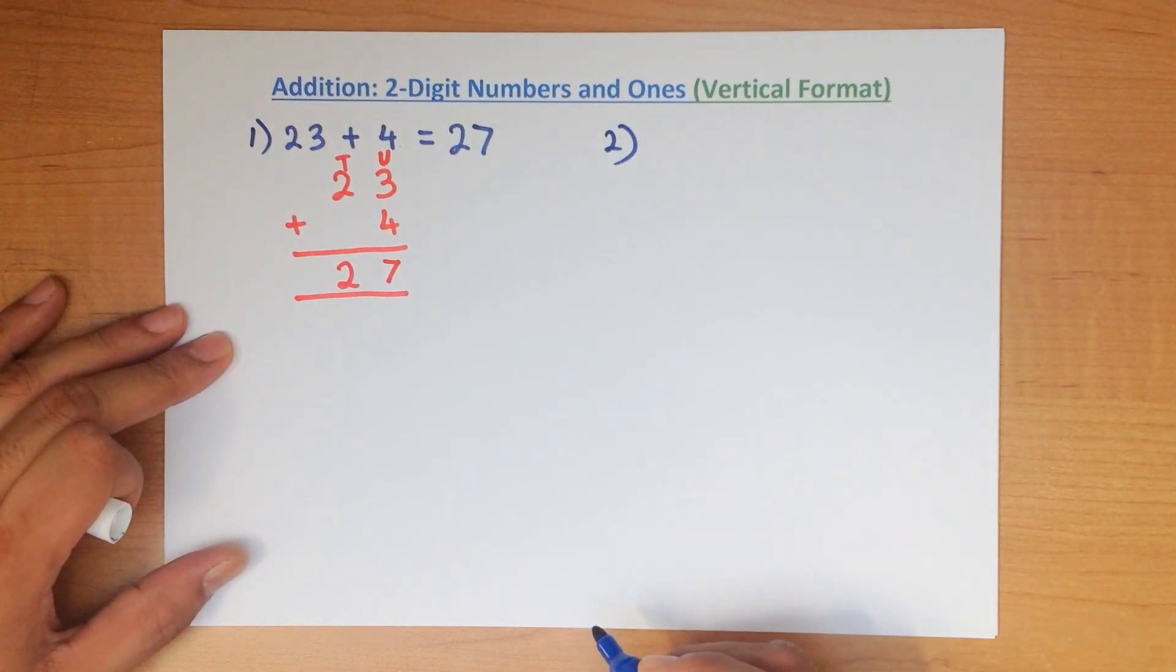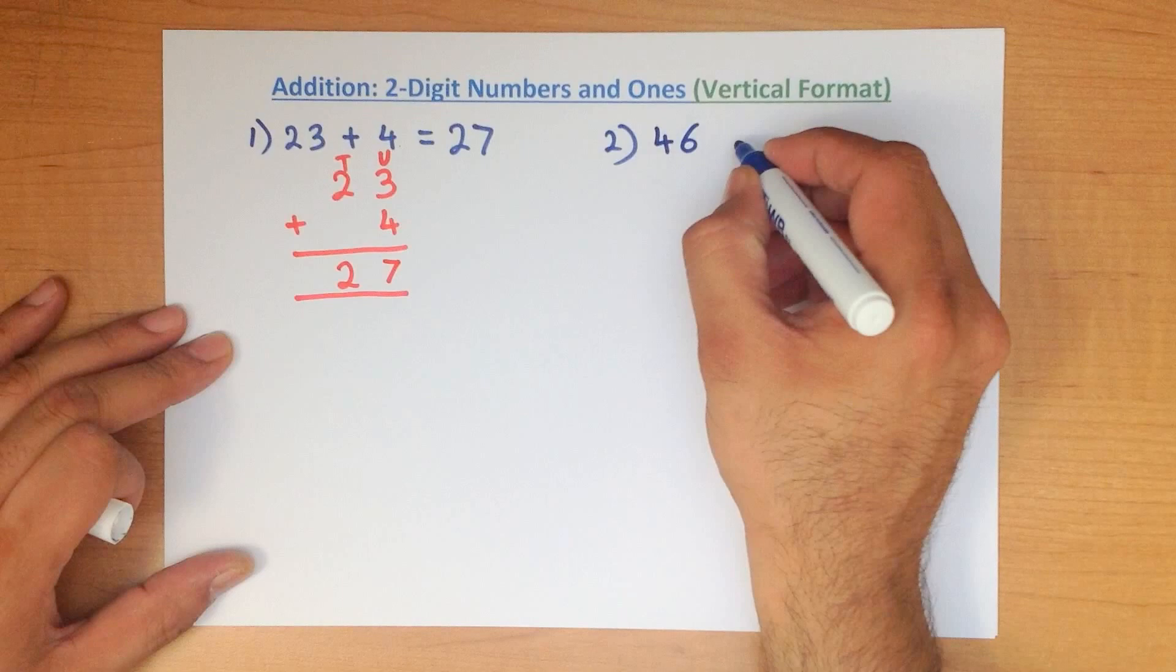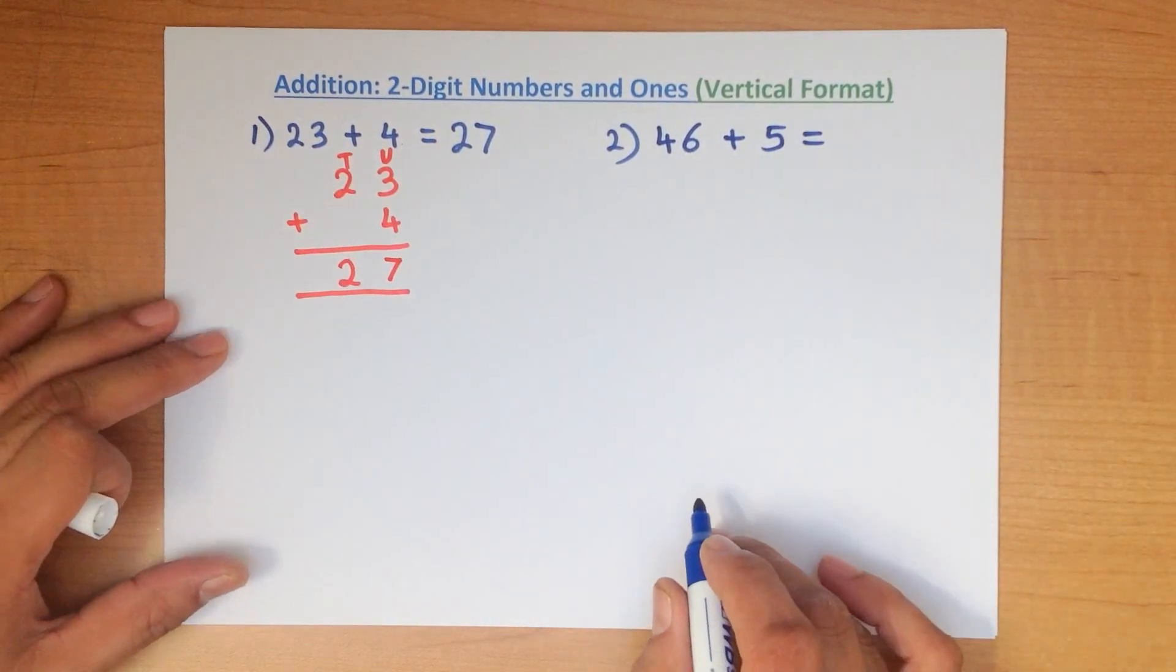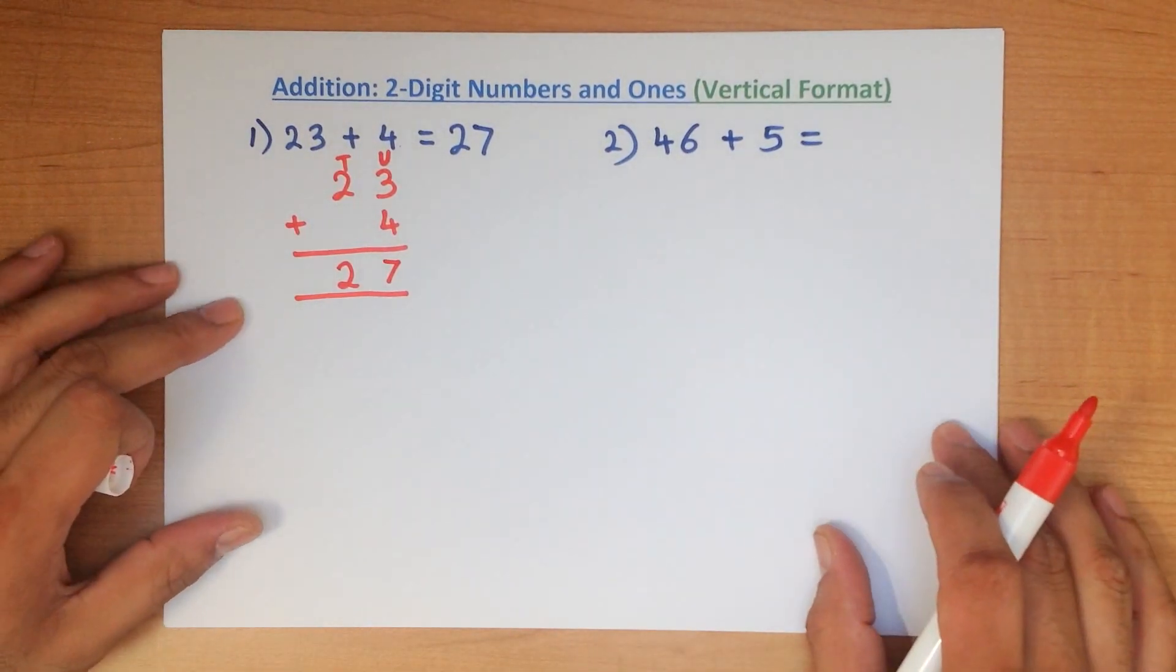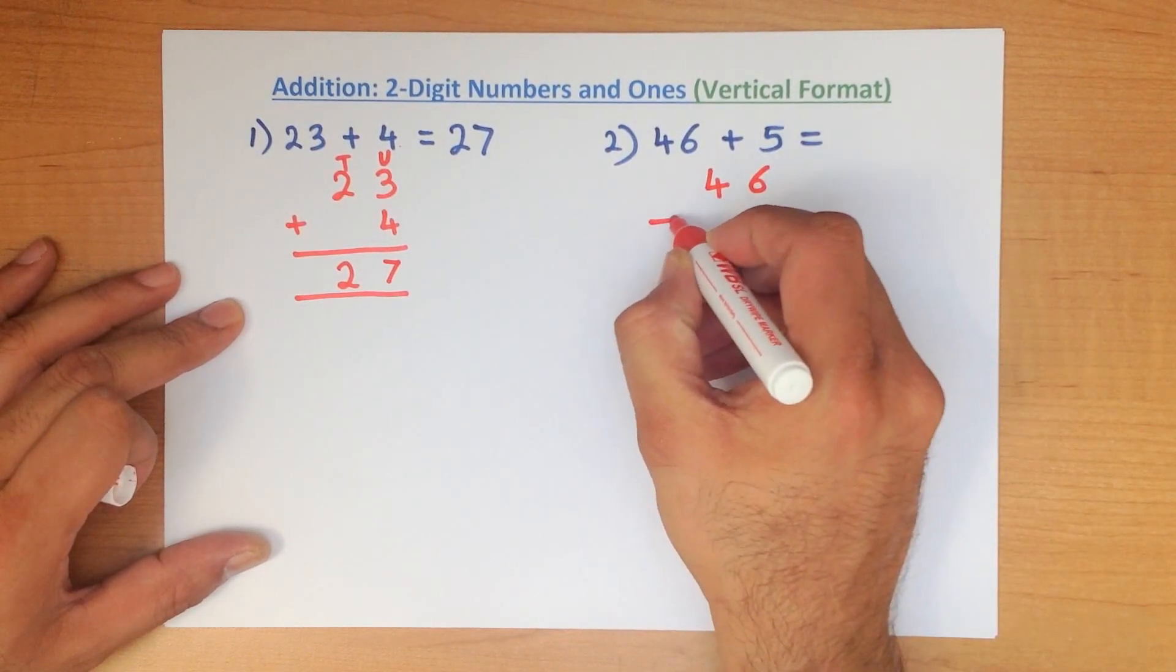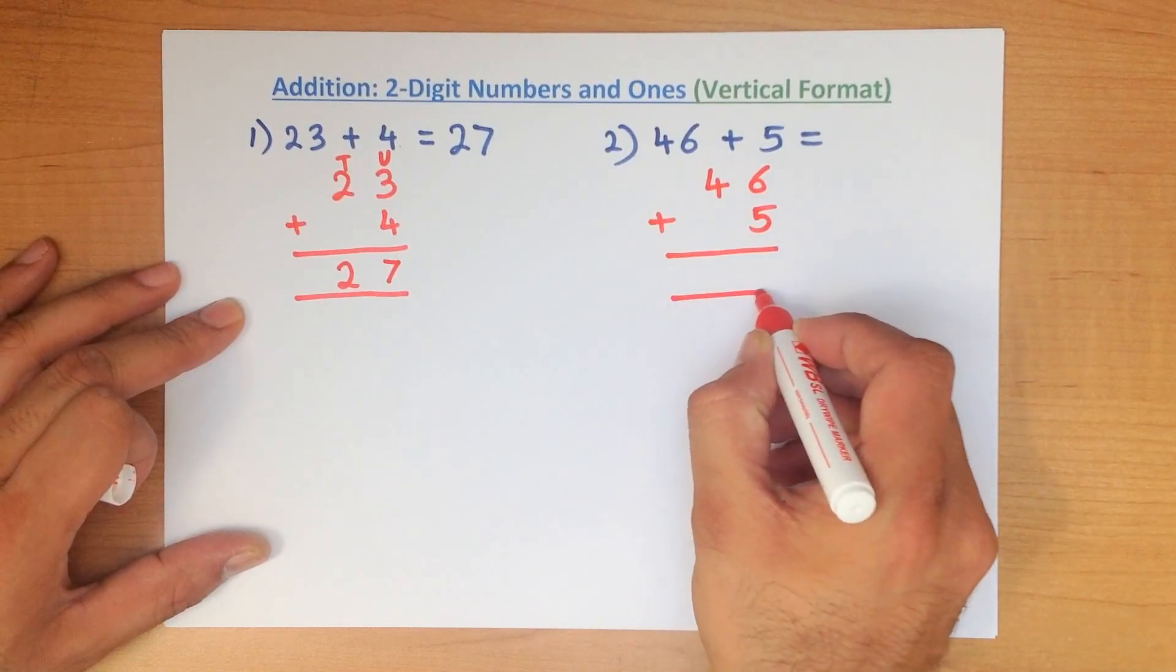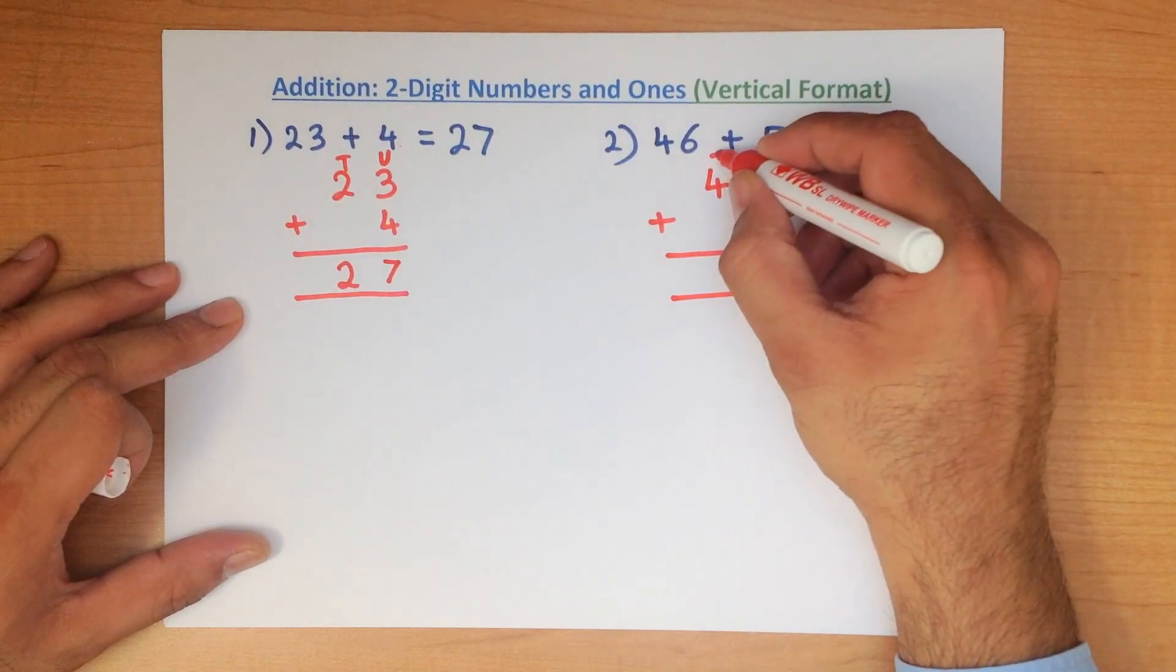Let's look at our second example. What is 46 plus 5? The first thing we do is we write the numbers down in the vertical format. 46 plus 5. Let's put an equal sign here. We can label them again.